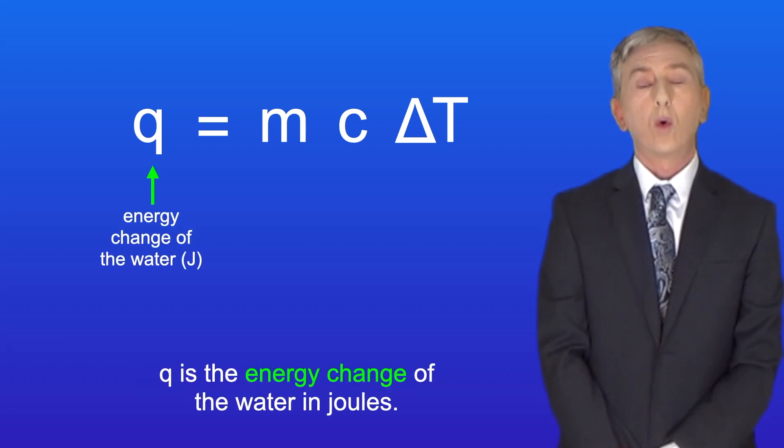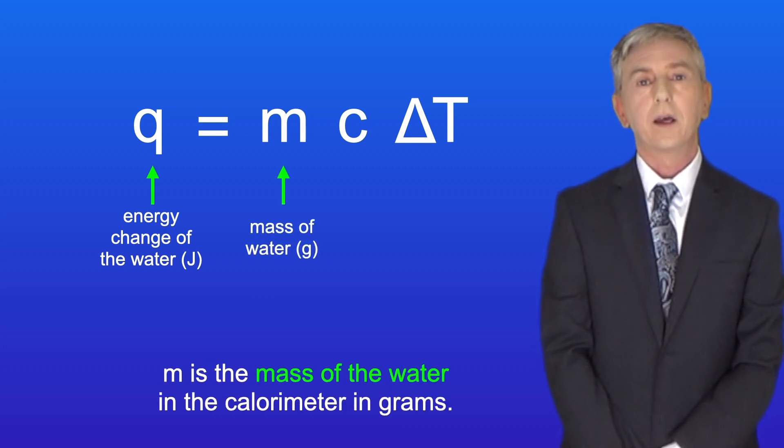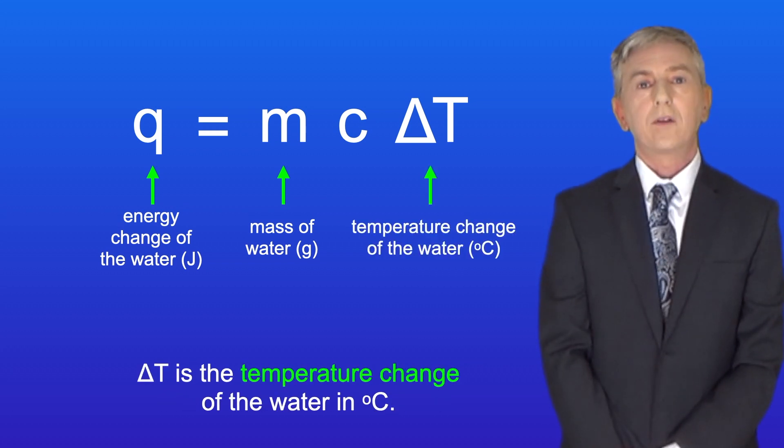Q is the energy change of the water in joules. m is the mass of the water in the calorimeter in grams. And delta t is the temperature change of the water in degrees Celsius.